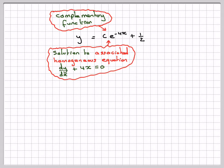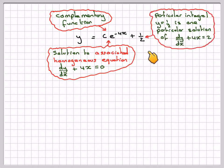The last part here is called a particular integral. y is equal to a half is a particular solution of the equation dy by dx plus 4x is equal to 2.